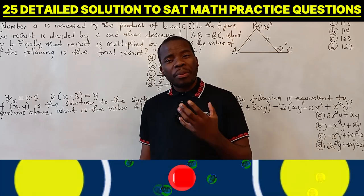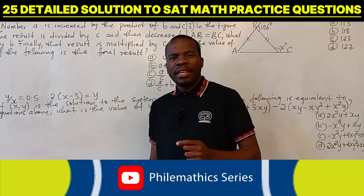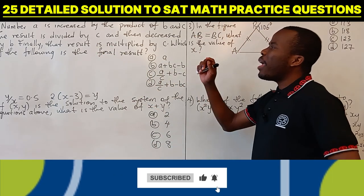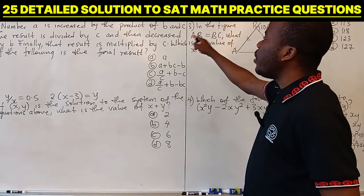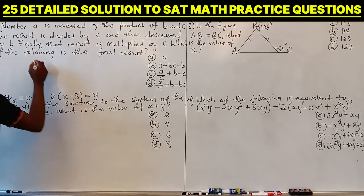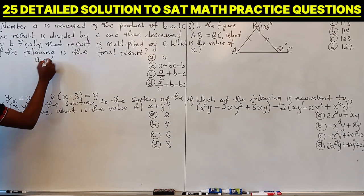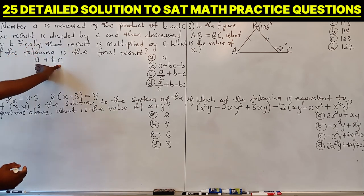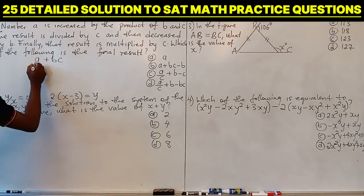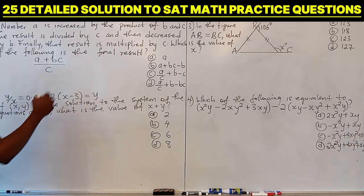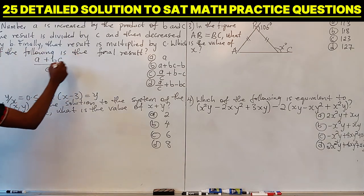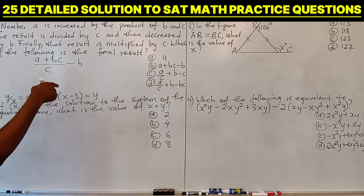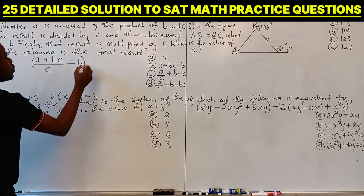Hello, today we are going to solve some practice problems on SAT — that is Scholastic Aptitude Test. Question 1 says: number A is increased by the product of B and C. That means A is increased by the product of B and C. The result is divided by C, then decreased by B. Finally, that result is multiplied by C.